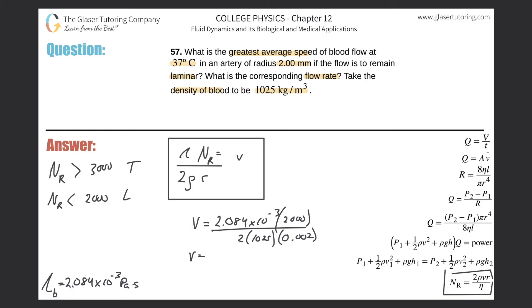Throw it into the calculator: 2.084 times 10 to the minus 3 times 2000, divided by (in parentheses) 2 times 1025 times 0.002.